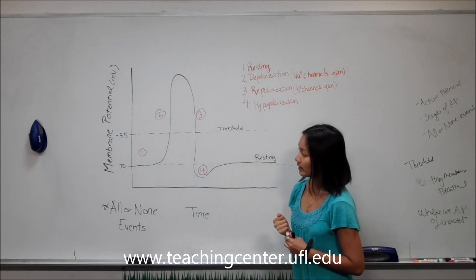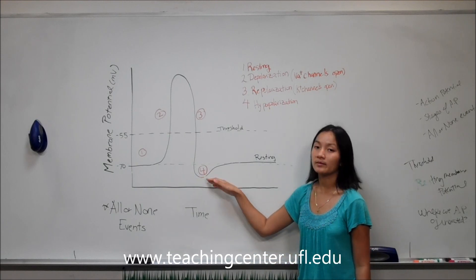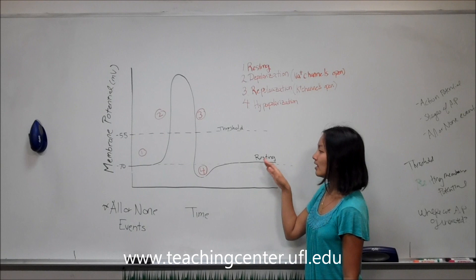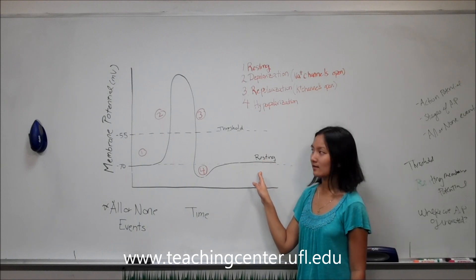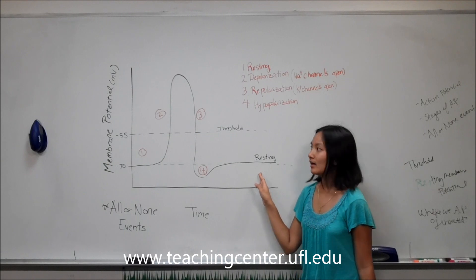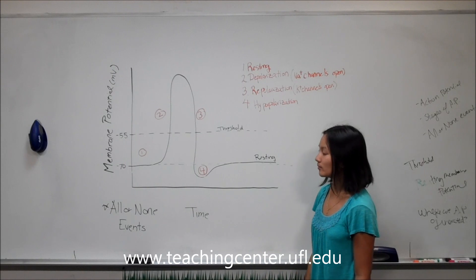At stage four, your potassium channels have closed. But you need your sodium-potassium pump to re-achieve that ideal resting membrane potential at negative 70. So those are the basic stages of action potential within the cell neuron.